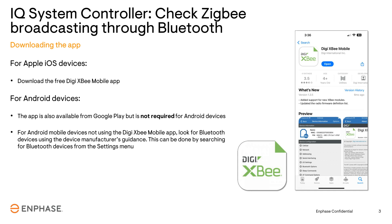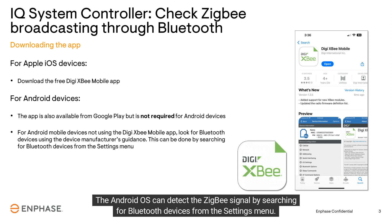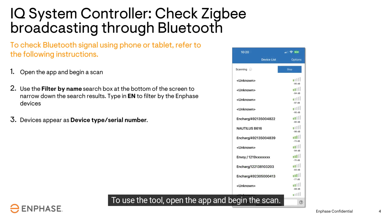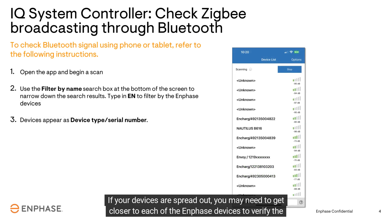Android users can also detect the Zigbee signal by searching for Bluetooth devices from the Settings menu. To use the tool, open the app and begin the scan. If your devices are spread out, you may need to get closer to each of the Enphase devices.